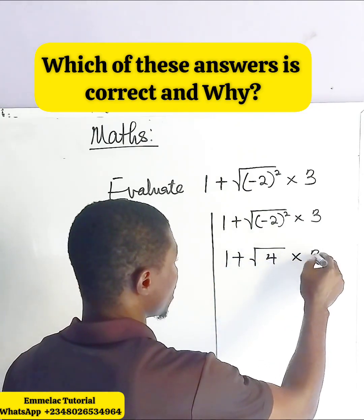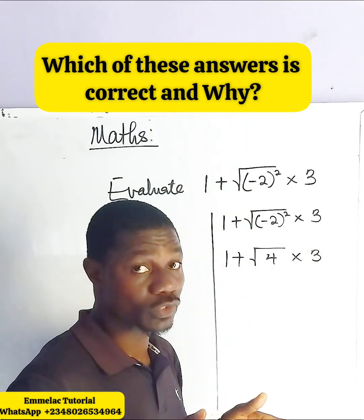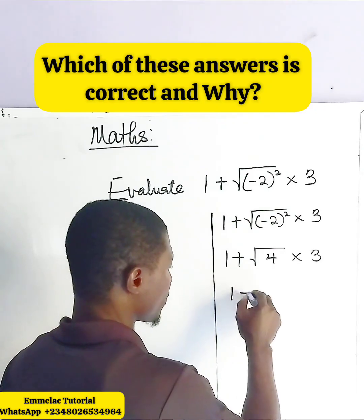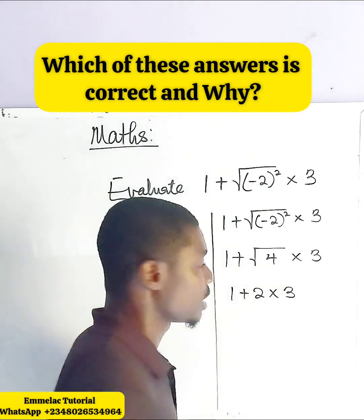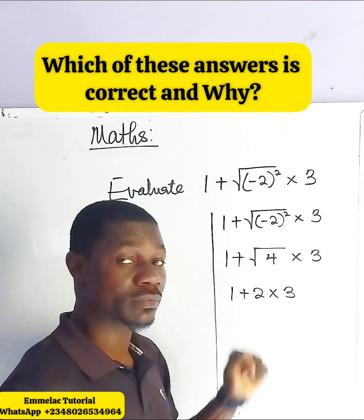That times what? 3. So here, the square root of 4 is what? 2. So here you have 1 plus 2 times 3. The next thing is multiplication, 2 times 3. That is 6.